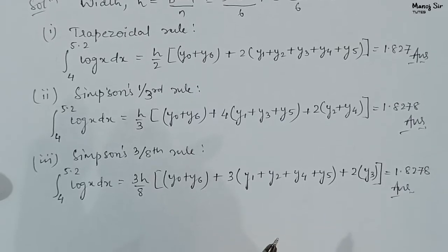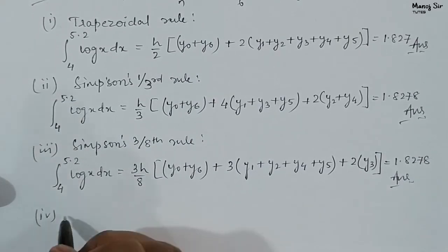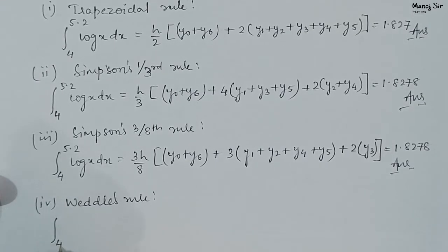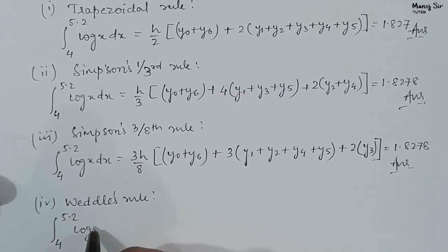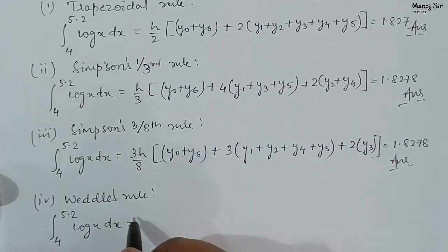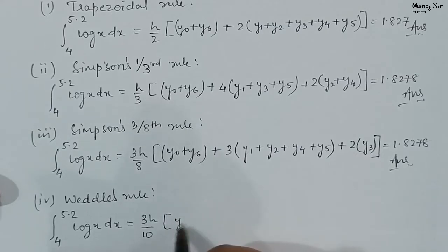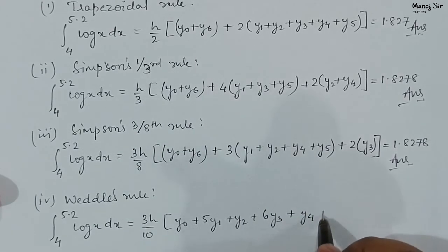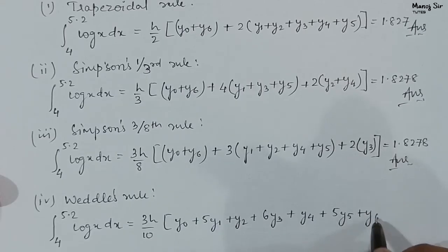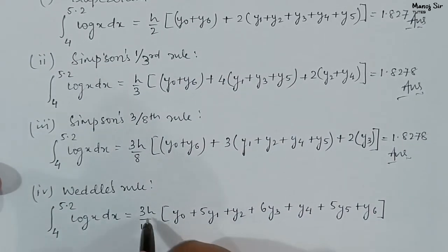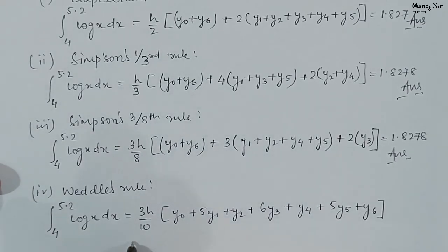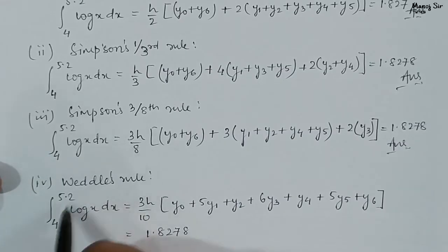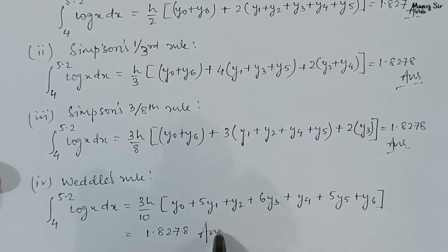Similarly, we come to the fourth part: Weddle's rule. The formula is 3h upon 10, with bracket: y0 plus 5 times y1 plus y2 plus 6 times y3 plus y4 plus 5 times y5 plus y6. On putting the values of h, y0, y1, y2, y3, y4, y5, y6, you get the value as 1.8278. So the value of this integration as per Weddle's rule is 1.8278. This is the last answer.